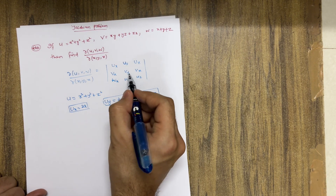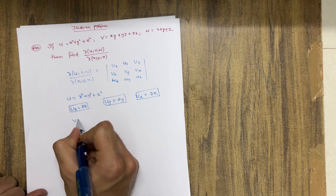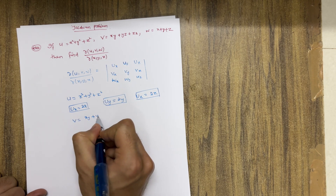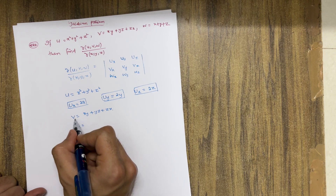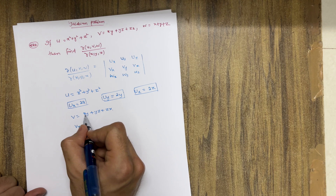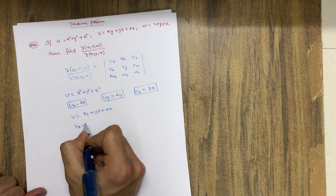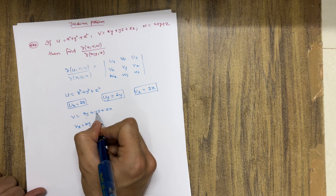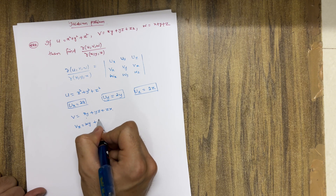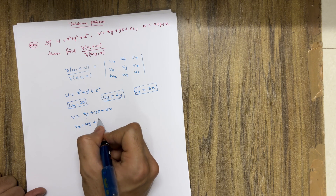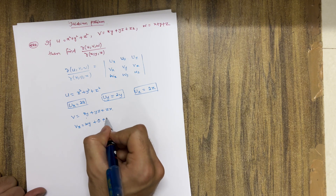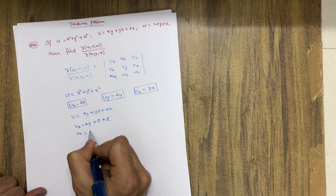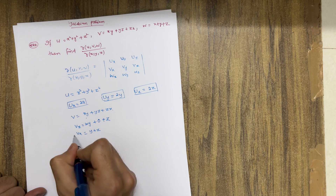Now we calculate vx, vy, vz, where v = xy + yz + zx. For vx, differentiating with respect to x: xy gives y, yz has no x so gives 0, and zx gives z. So vx = y + z.